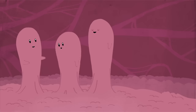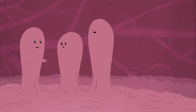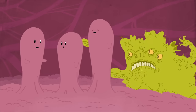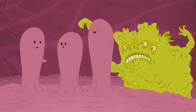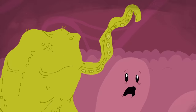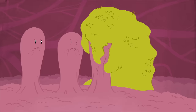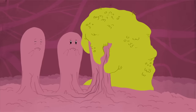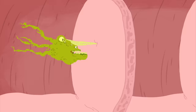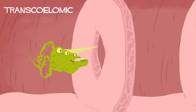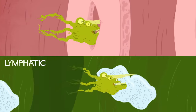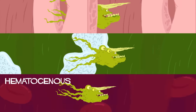It begins when cancer cells from the initial tumor invade nearby normal tissue. As the cells proliferate, they spread via one of three common routes of metastasis: transcoelomic, lymphatic, or hematogenous spread.